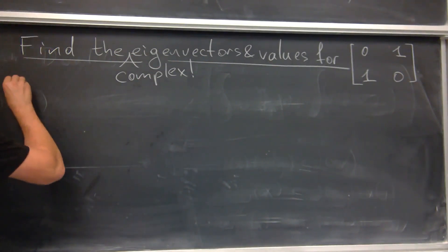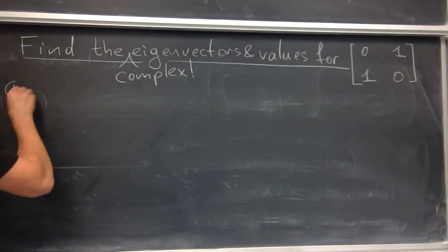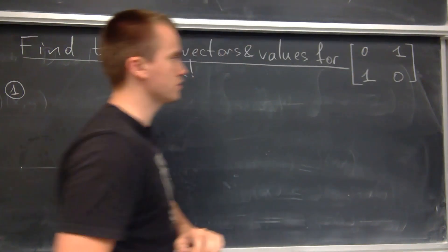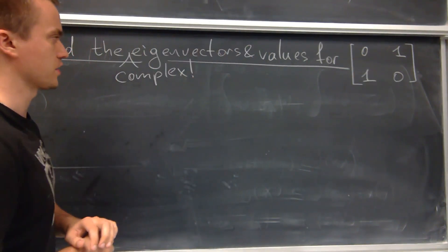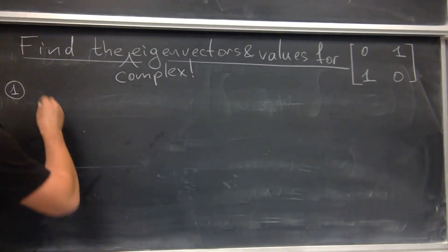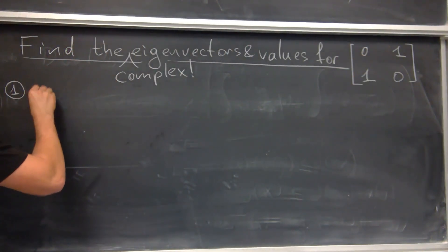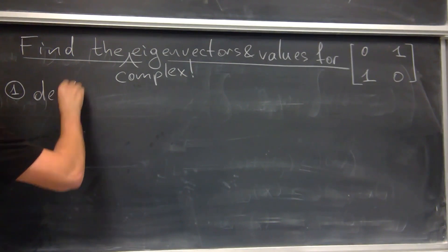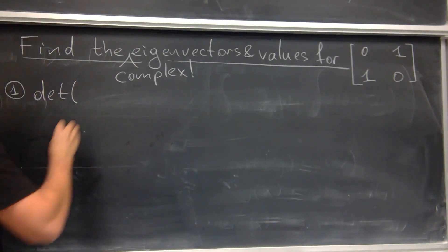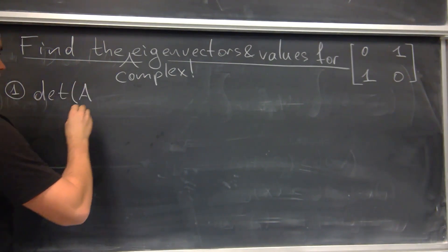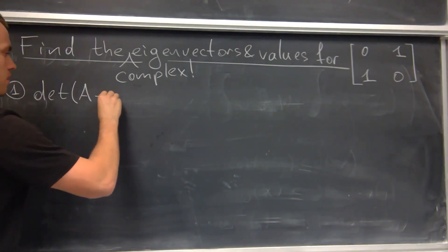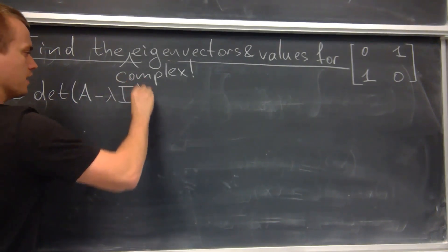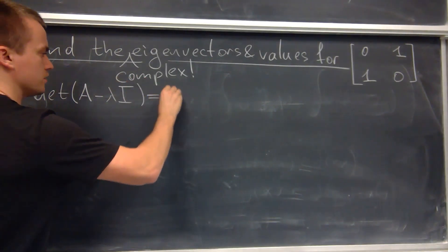For step 1, as you remember, I want to find the eigenvalues of this matrix. Finding eigenvalues uses a simple formula — I just need to find all values lambda such that the determinant of A minus lambda I equals zero.